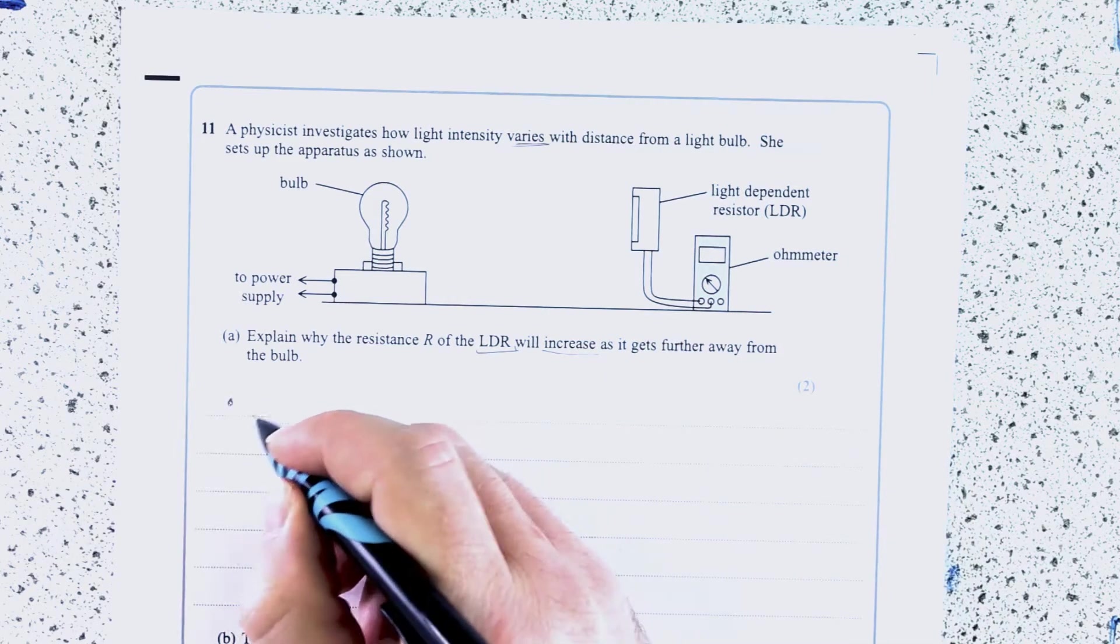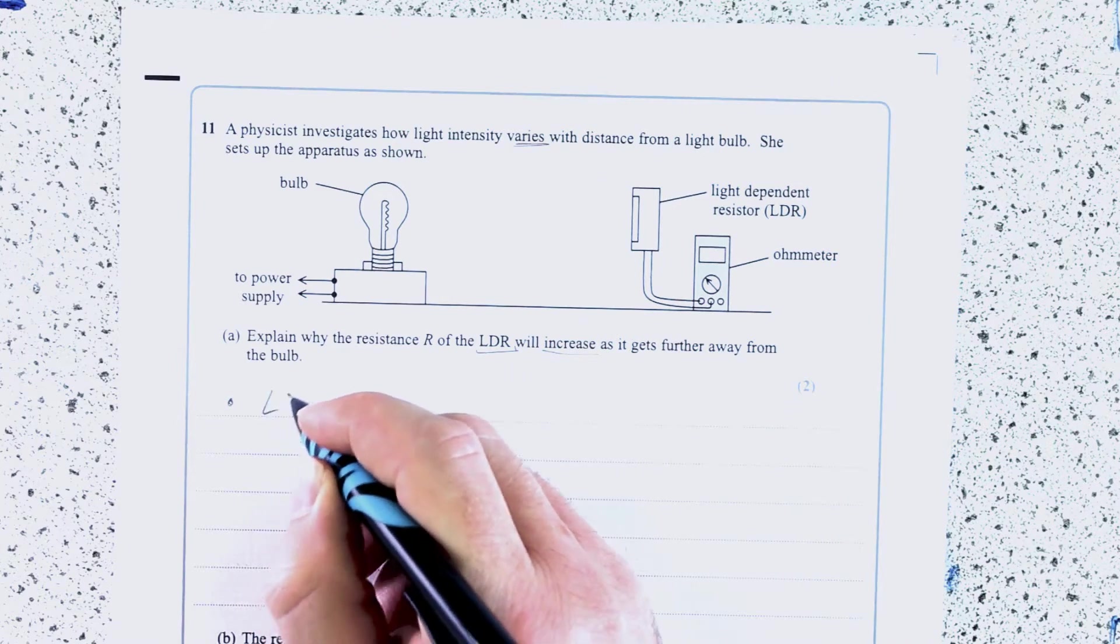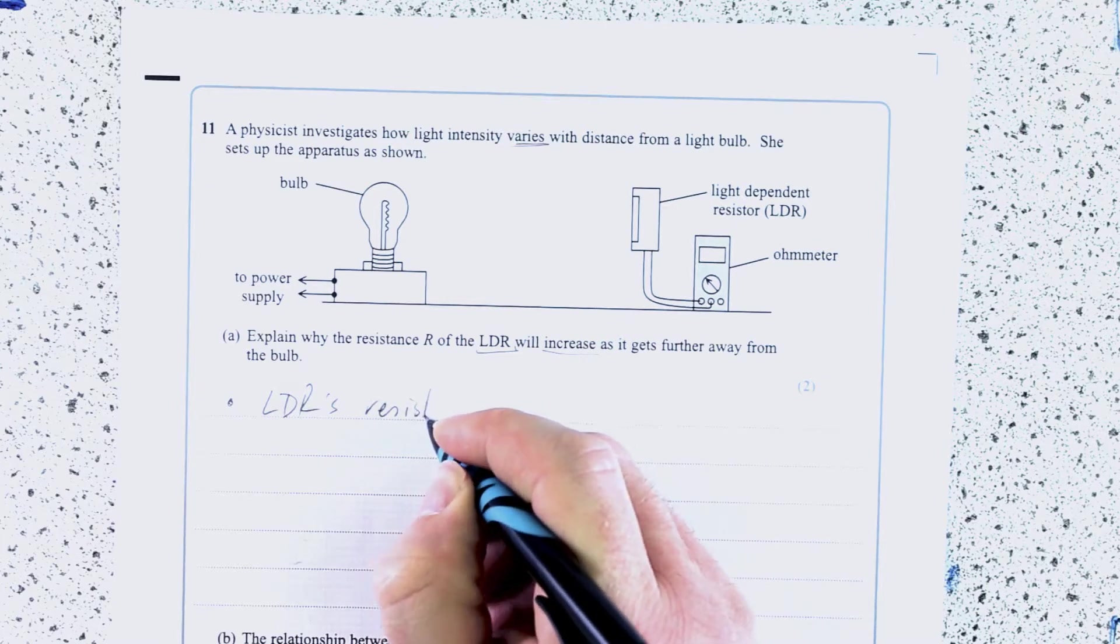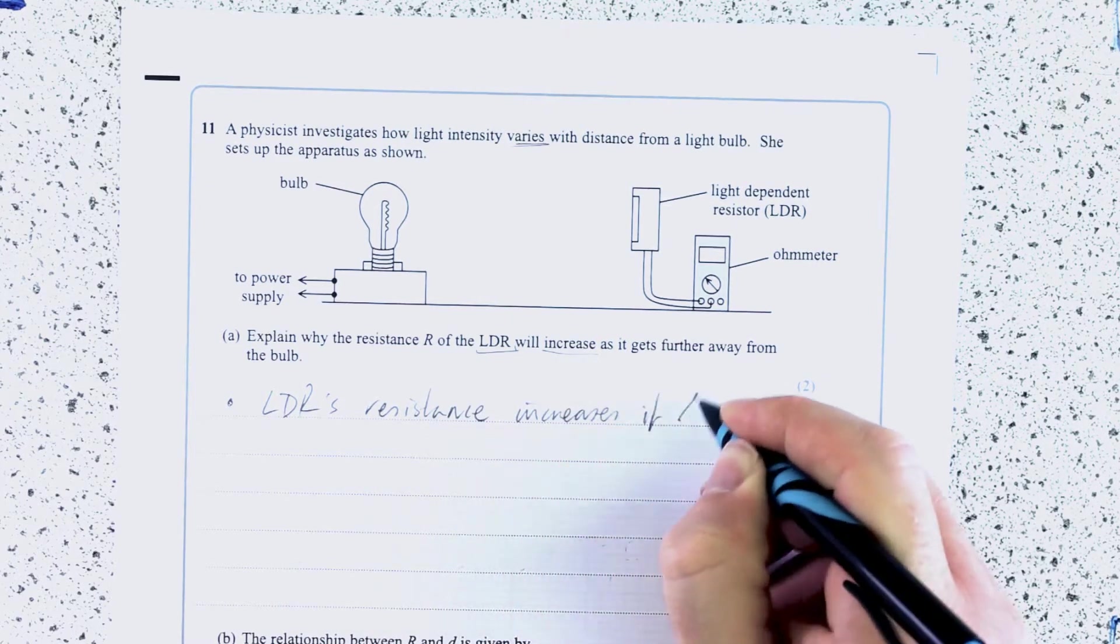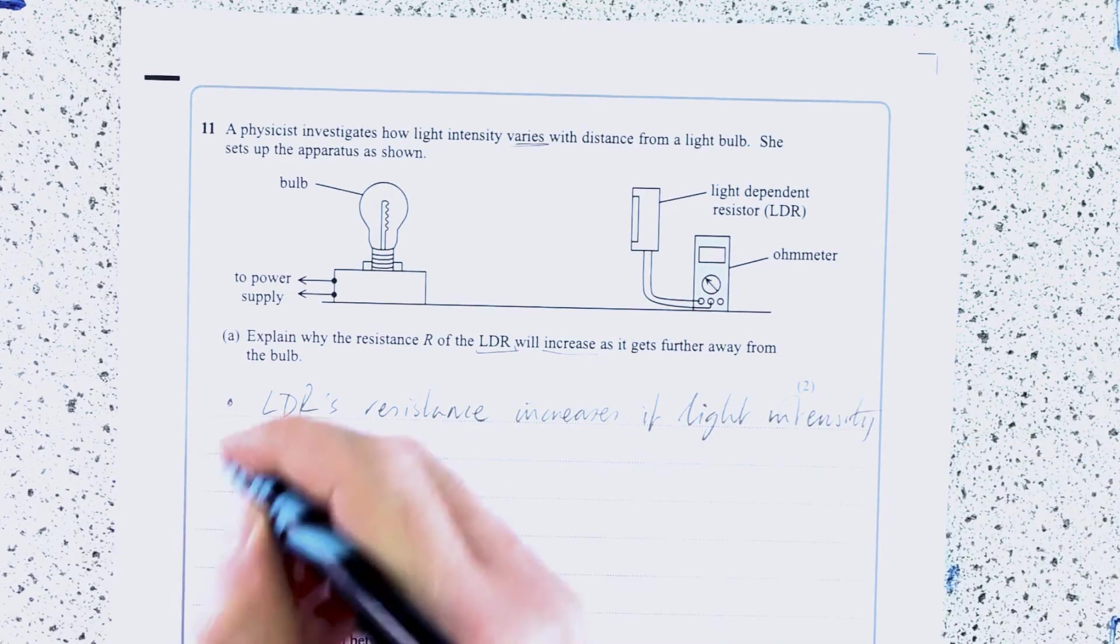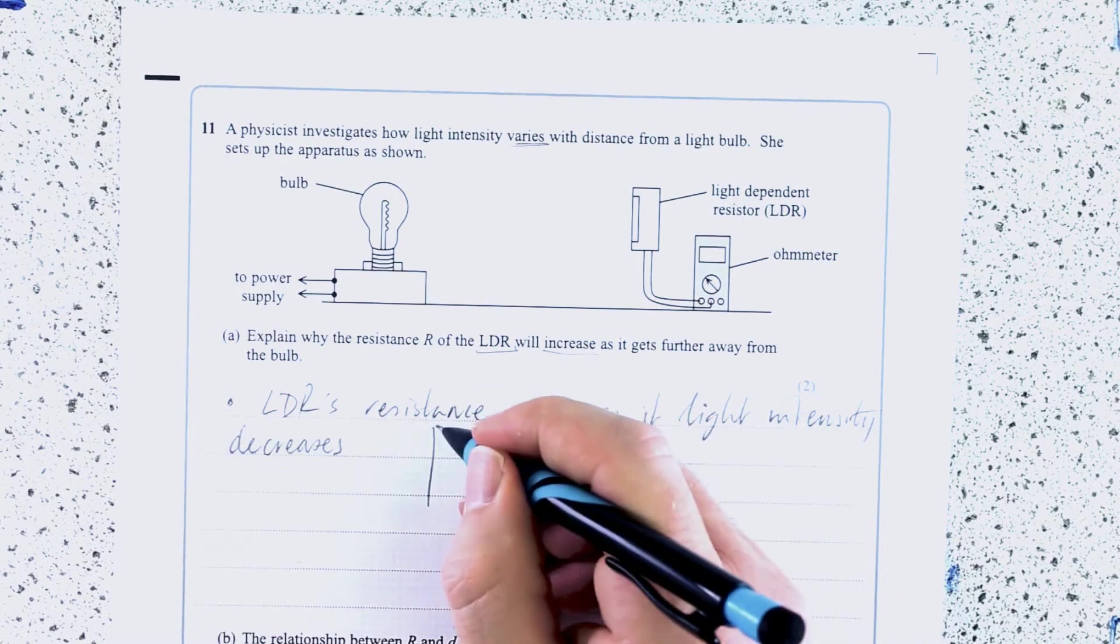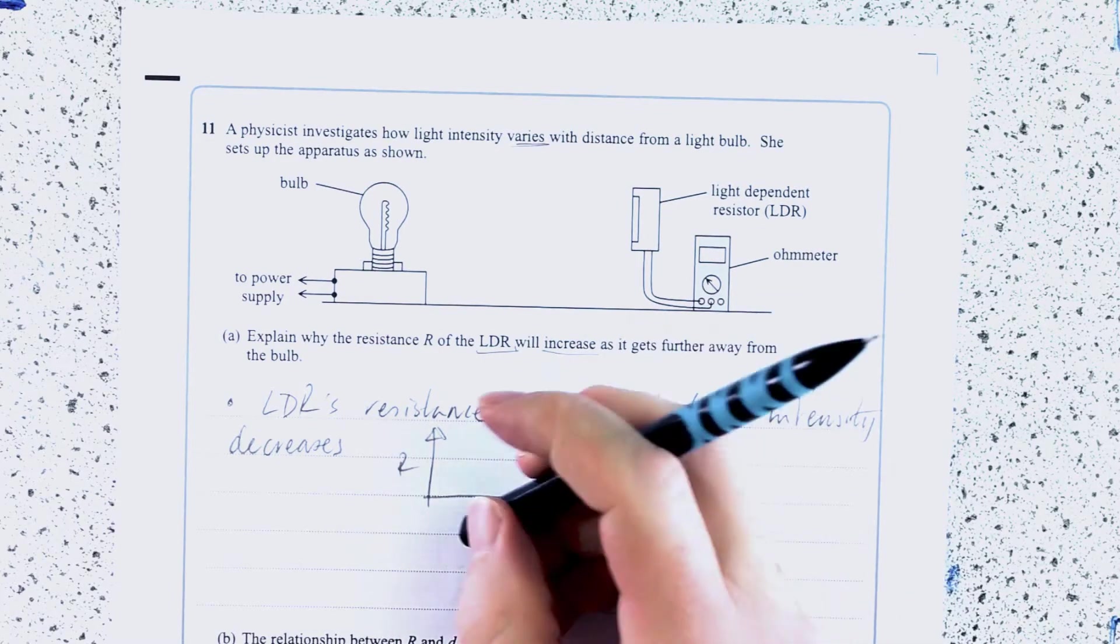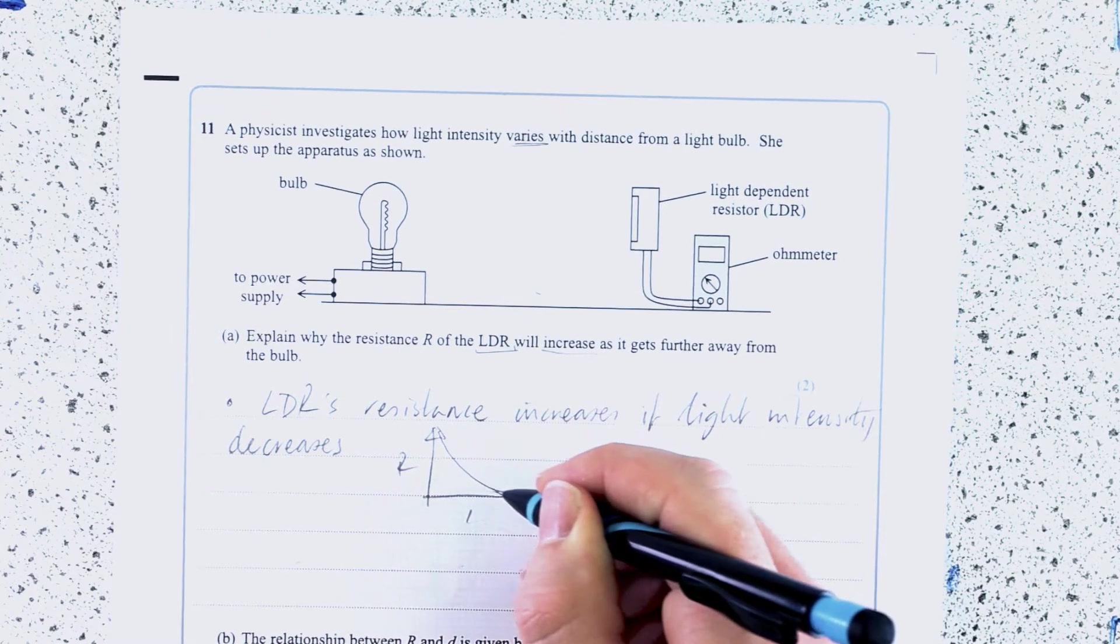Explain why the resistance R will increase as it gets further away. The first mark is just for stating what happens to an LDR with changing light intensity. LDR's resistance increases if light intensity decreases. That is just actually memorized, really. If I've got resistance and light intensity, I'll use I rather than L for the velocity, then it decreases like this. It decreases exponentially.